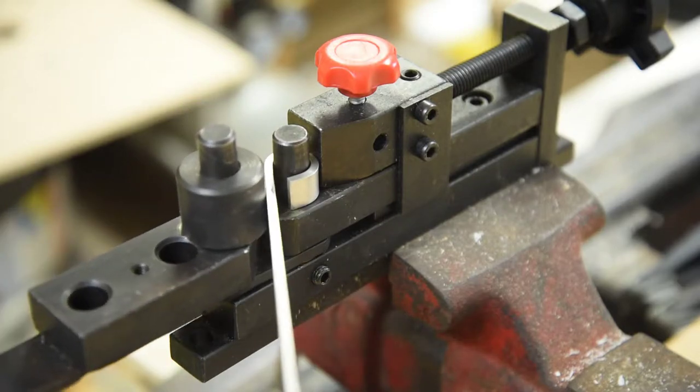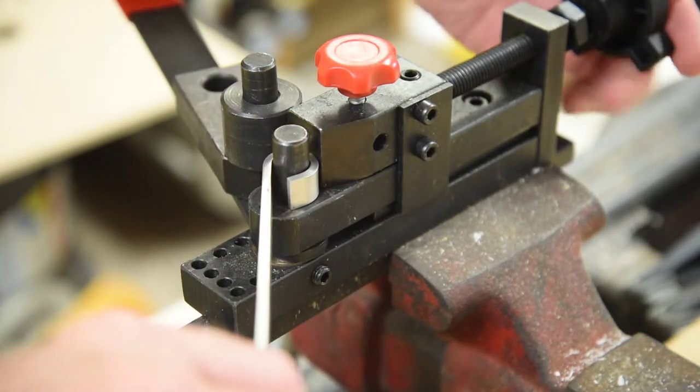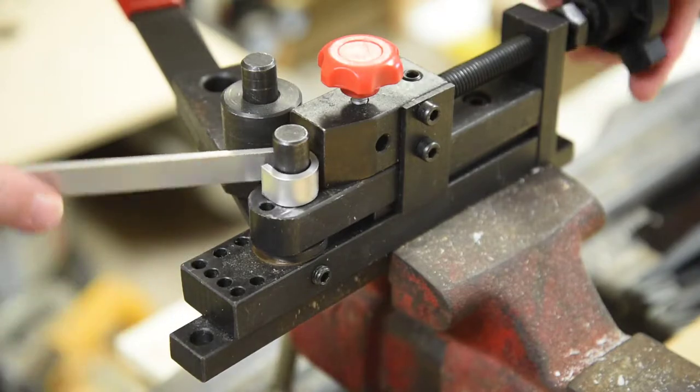Here's where another problem shows up. The clamp cannot hold the bar and it will just spin around the center pin.